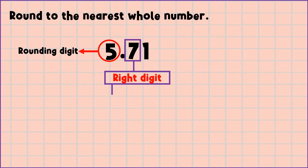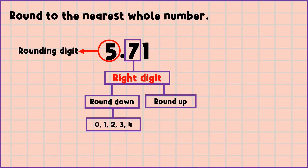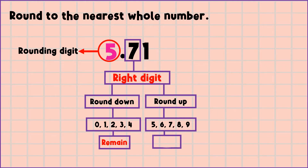Let's evaluate 7 — is it a round down or round up digit? Round down digits are 0, 1, 2, 3, and 4. The round up digits are 5, 6, 7, 8, or 9. If the digit to the right of the rounding place is a round down digit, then the rounding digit will be remained. But if the digit to the right of the rounding digit is a round up digit, then the rounding digit will be added by 1.